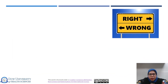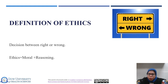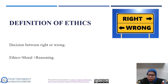What is ethics and what is the basic definition of ethics? Ethics is the decision between right and wrong. Ethics equals moral plus reasoning. In other words, ethics refers to the moral principles and values that guide human behavior and decision making. It involves determining what is right and wrong, good or bad, and how individuals and society should act.